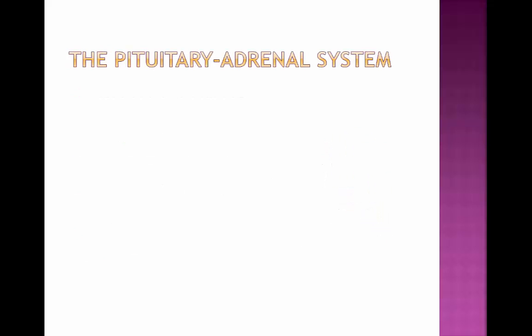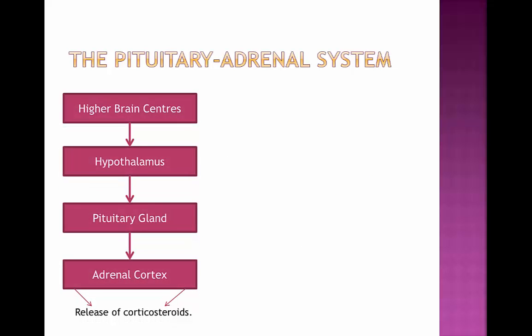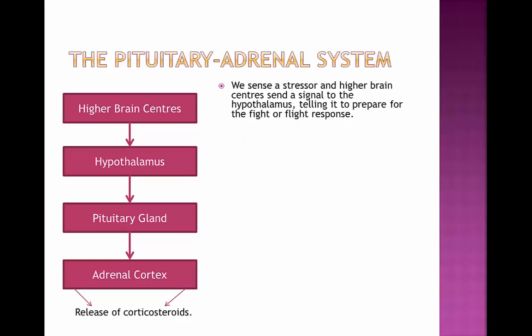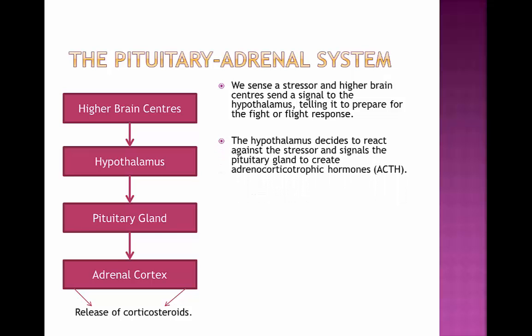The pituitary adrenal system. What you can see now on screen is the flow chart of the pituitary adrenal system. It begins by the fact that we sense a stressor and the higher brain centers in our body send a signal to the hypothalamus. The hypothalamus is the part of the brain which deals with the fight-or-flight response. It then tells the hypothalamus to prepare for this fight-or-flight response. Then the hypothalamus decides to react against the stressor and it signals the pituitary gland to create adrenocorticotrophic hormones, otherwise known as ACTH.